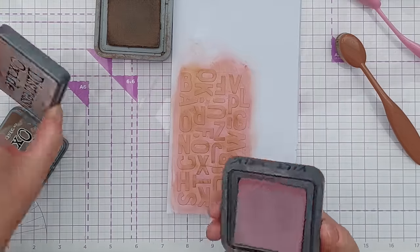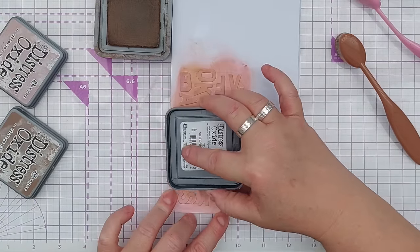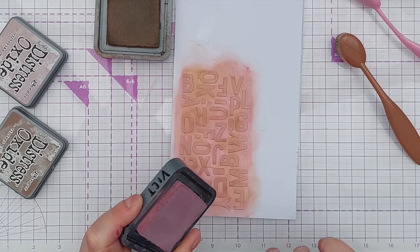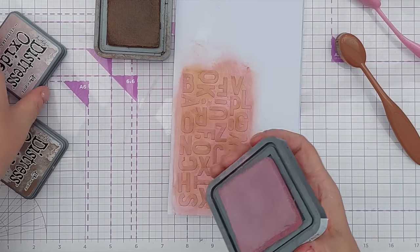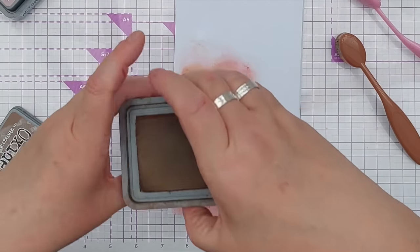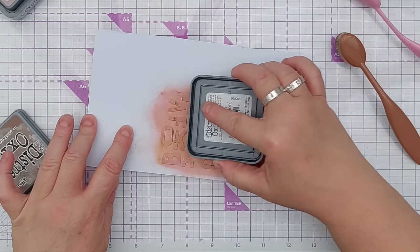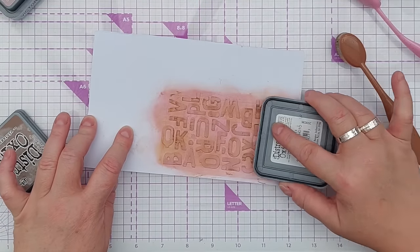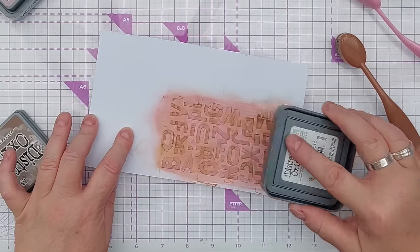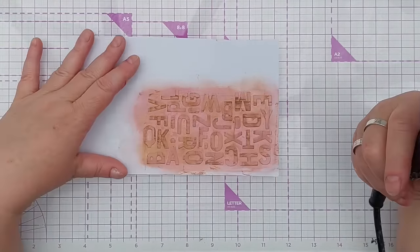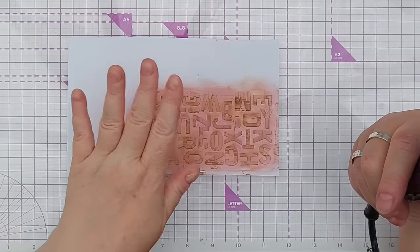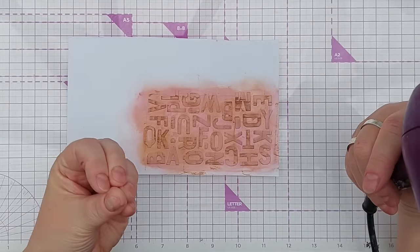And now I'm going to go back in with my pink and scrape across a bit. I might get a bit of Vintage Photo on there but I can wipe it off with a paper towel on my finger. Same again, I'm going to go from the other direction this time and just scrape a little bit. I'm not going to blend it, I'm just adding a bit of texture really. And because I've sealed the paper with gesso, the ink is just going to sit on top of the gesso, it's not going to get sucked into the paper.